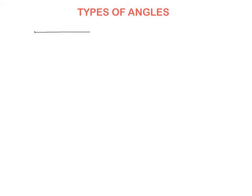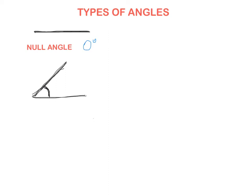Let's go through the types of angles. The first is the null angle — the arms coincide with one another, so one arm lies exactly on the other, giving zero degrees. We don't need to mark anything here. The next type is when the angle is greater than zero and less than 90 degrees — something like this — and remember we need to mark where the angle is. This is an acute angle: less than 90 degrees but more than zero.